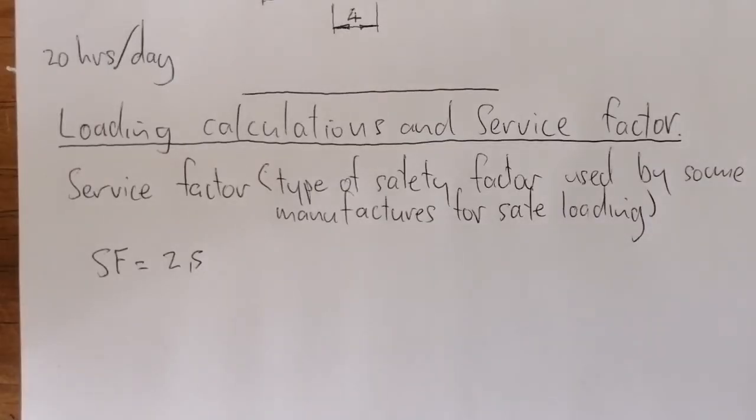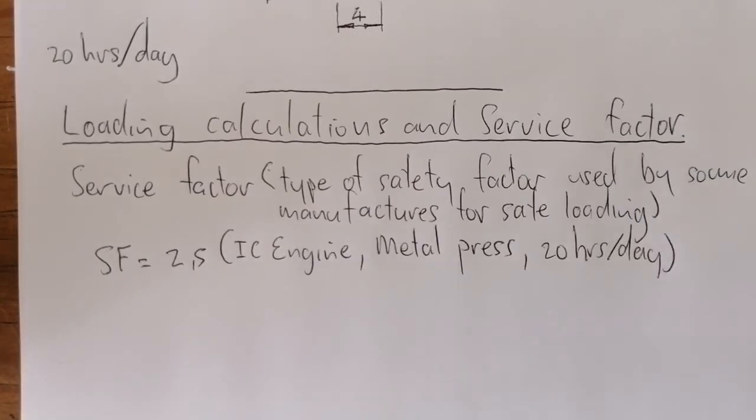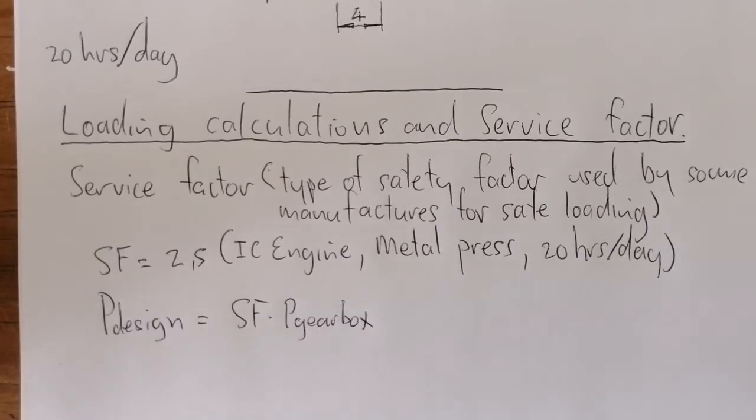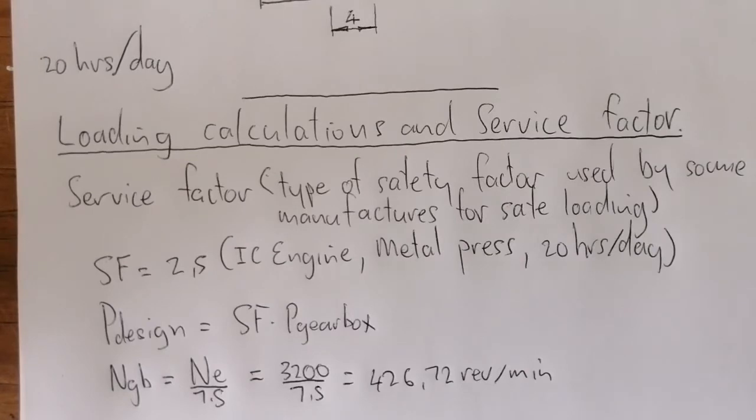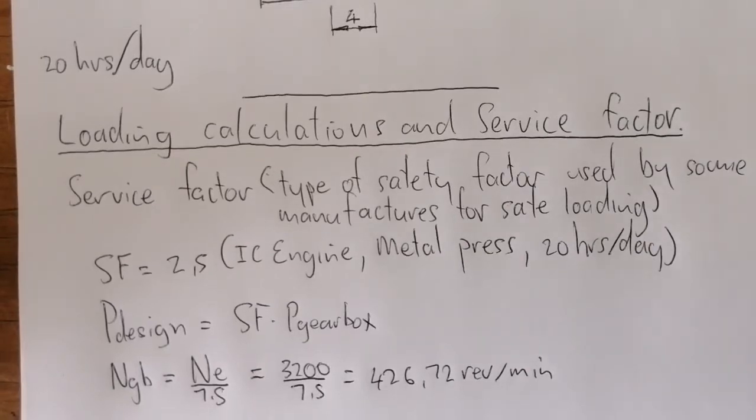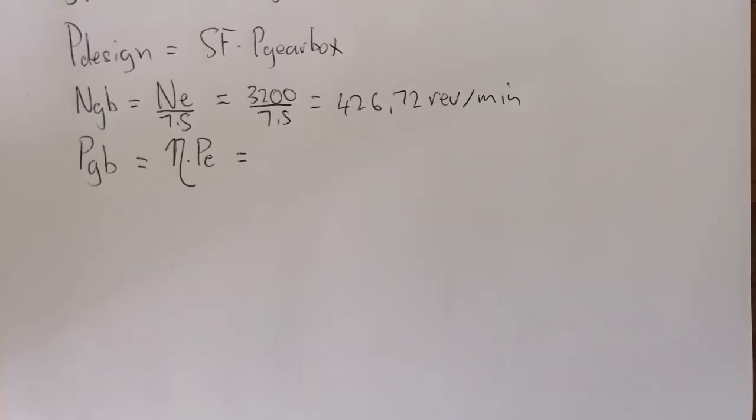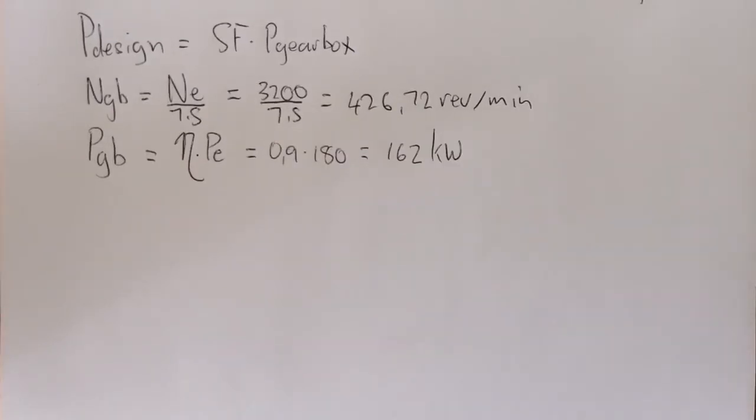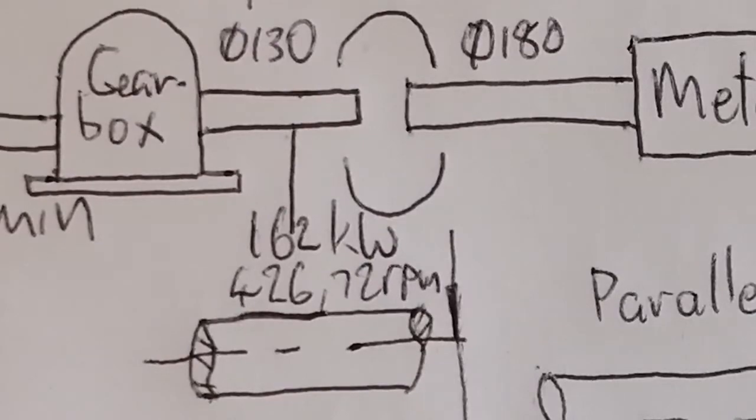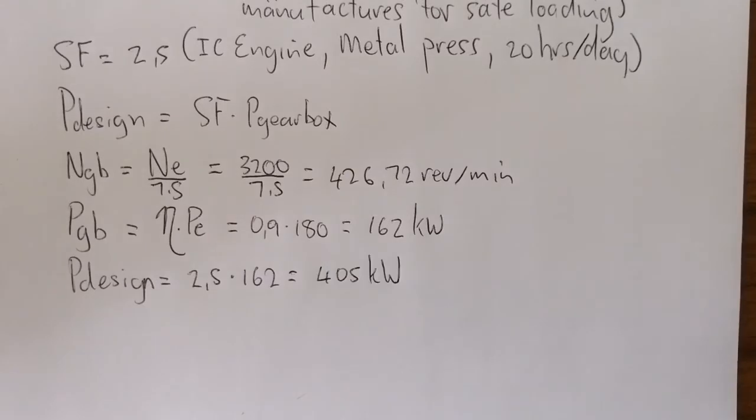The service factor is a safety factor used by manufacturers to allow for safe loading. Now looking at design power, we have safety factor times the gearbox power. Speed of the engine over the reduction equals 426.72 RPM. The power of the gearbox equals the efficiency times the power of the engine. Thus the power into the coupling is 162 kilowatt on the 130 millimeter shaft at 426.72 RPM. Power design equals 405 kilowatt.